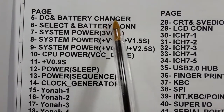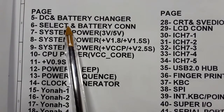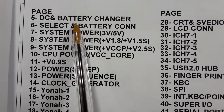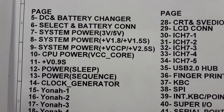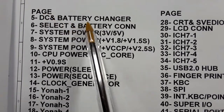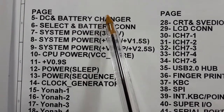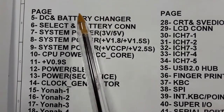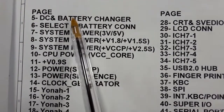We say 'changer' not 'charger' because in the circuit the power management IC changes between the adapter and the battery. When you plug the adapter, the power of the motherboard comes from the adapter. When you remove the adapter, the power management IC will automatically change the source of power — the battery will become the source of power.